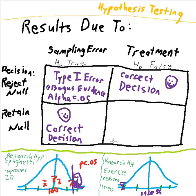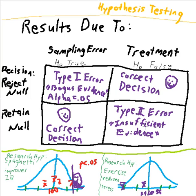On the other hand, let's say we had a group of people who were incredibly stressed to begin with. They exercised, and it brought their stress level down to a certain level. We compare this group's stress level to the population and see not much of a difference. That's a type 2 error — where we have insufficient evidence — and we fail to detect that the treatment actually worked.